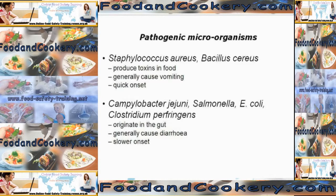For example, Staphylococcus aureus and Bacillus cereus — the rice bacteria. One way of remembering Bacillus cereus: rice is a cereal, and cereus and cereal are quite similar sounding words. These bacteria generally produce toxins in food, generally cause vomiting, and have a quick onset — in other words, the food poisoning happens quite quickly.